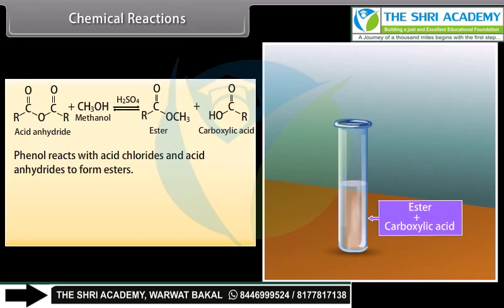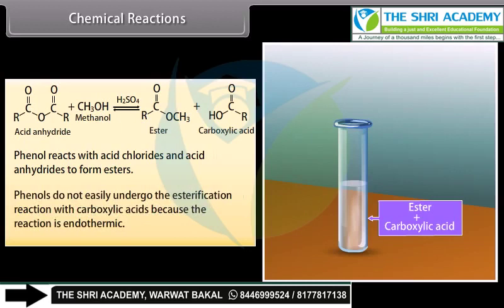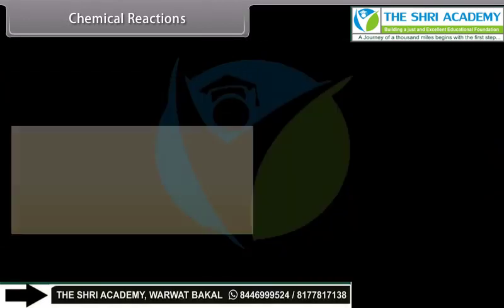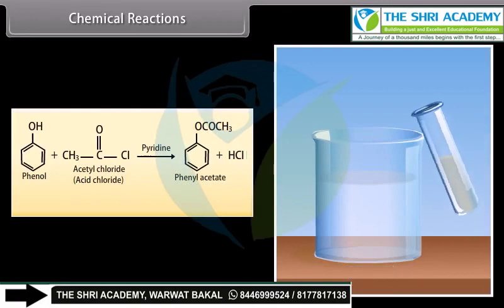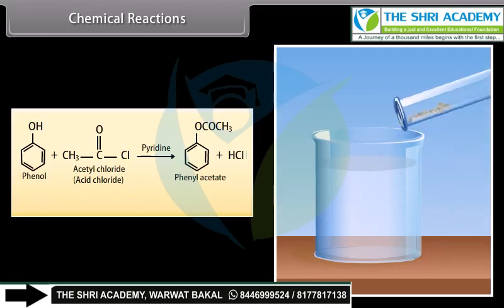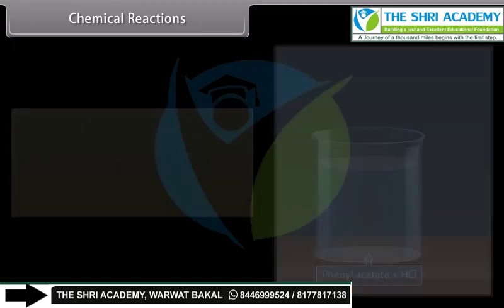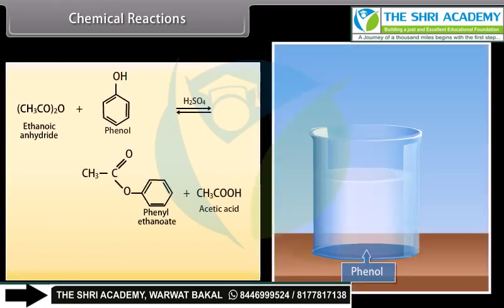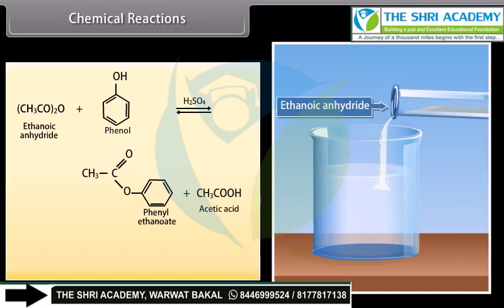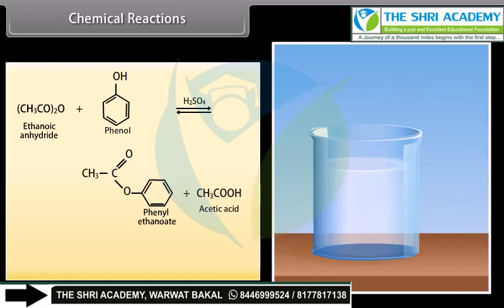Phenol reacts with acid chlorides and acid anhydrides to form esters. Phenols do not easily undergo the esterification reaction with carboxylic acids because the reaction is endothermic. Phenol reacts with acetyl chloride in the presence of pyridine to form phenyl acetate and hydrochloric acid. Ethanoic anhydride reacts with phenol in the presence of sulfuric acid to form phenyl ethanoate and acetic acid.